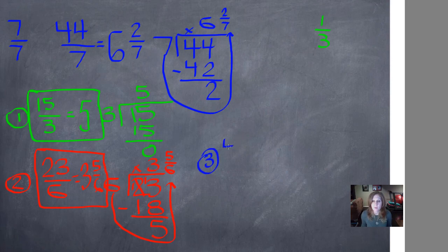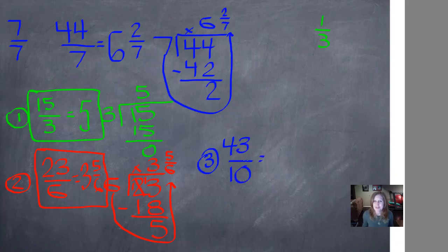Number three is 43 tenths. Convert that to a mixed number. Pause it and push play when you're ready.